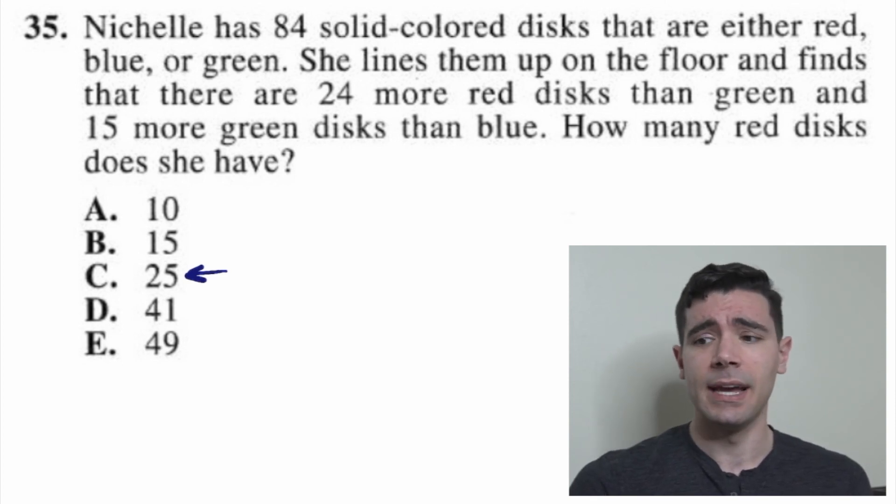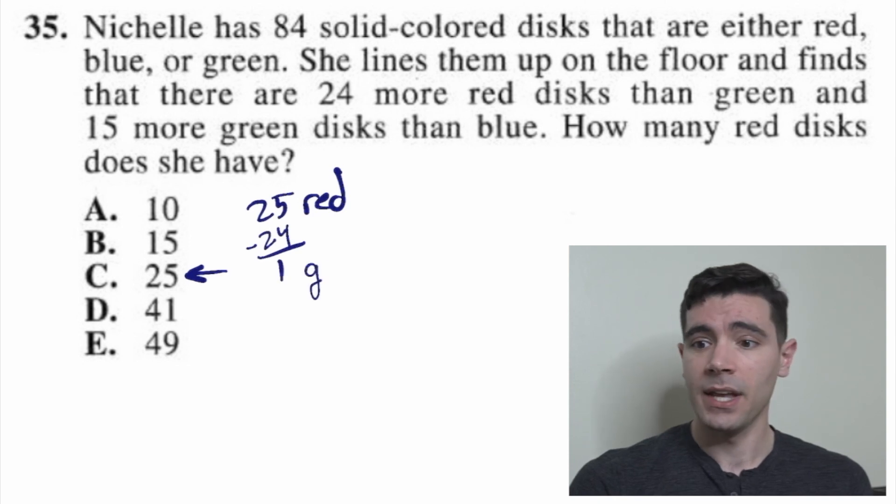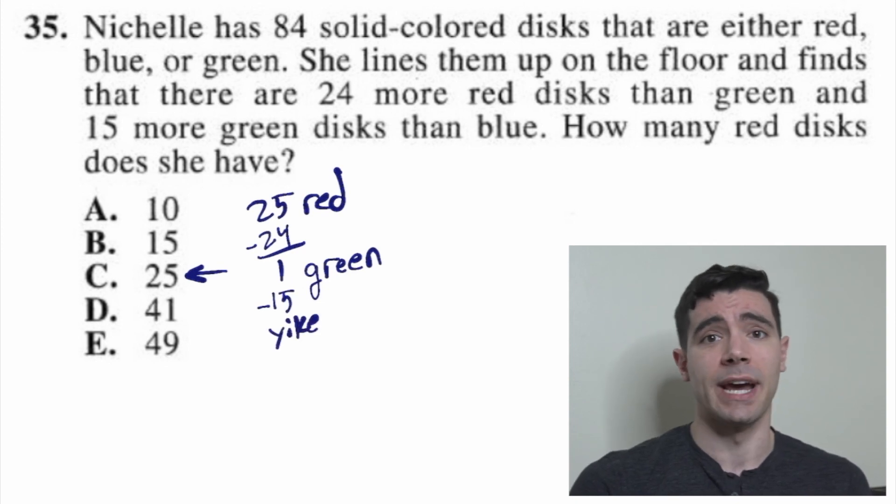Let's start with 25. If Nichelle had 25 red disks, what would we know? Well, she has 24 more red disks than green. So 25 is 24 more than 1. So we would have 1 green disk. And she has 15 more green disks than blue. Oh, well, this doesn't work. 1 isn't 15 bigger than a number of disks that you could have.